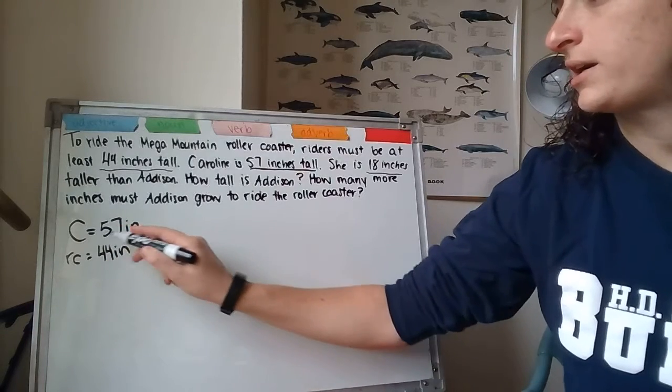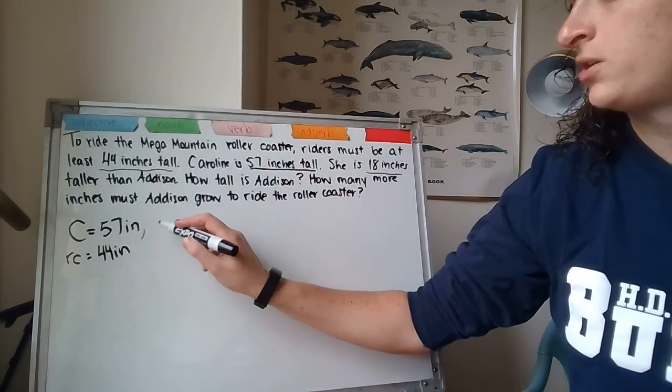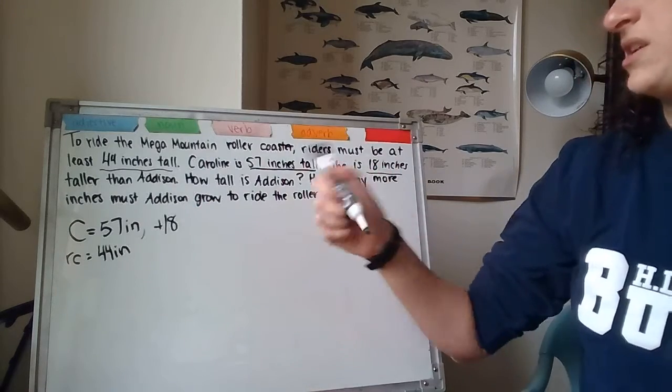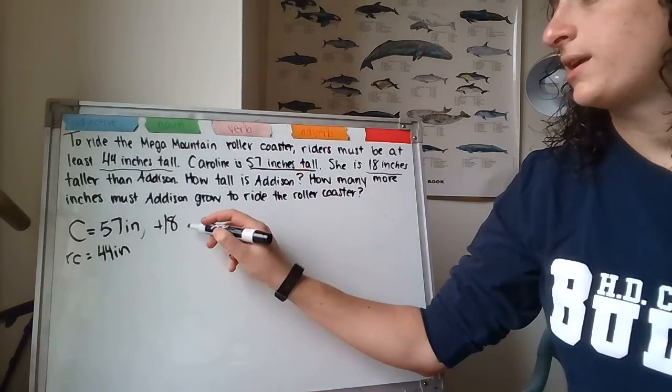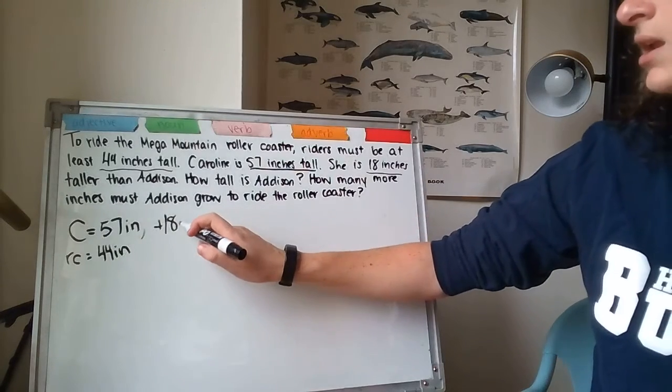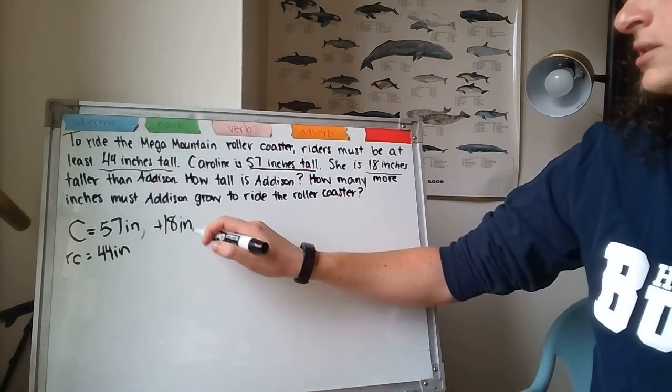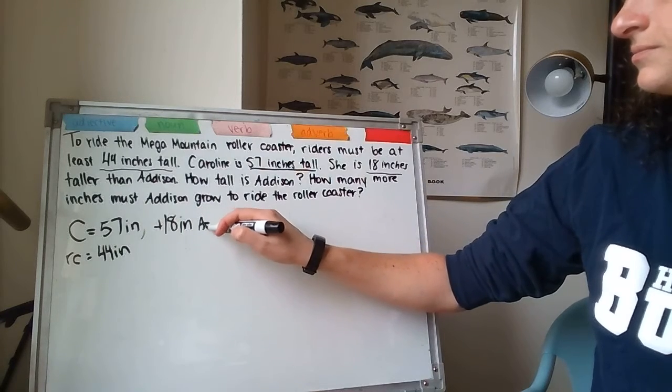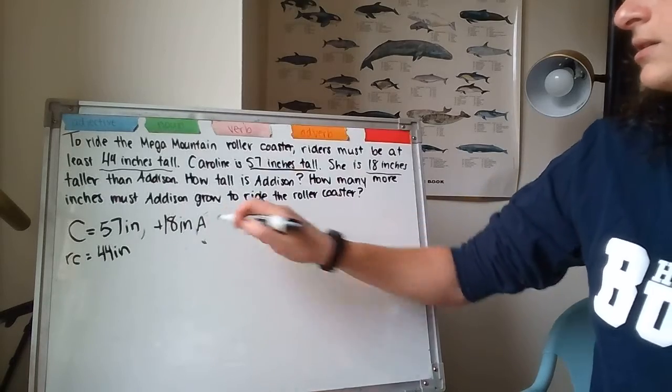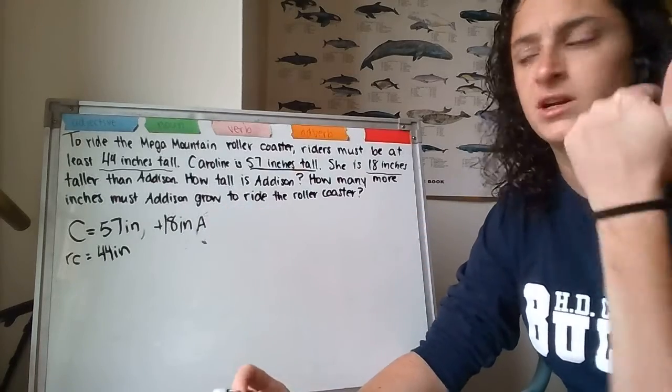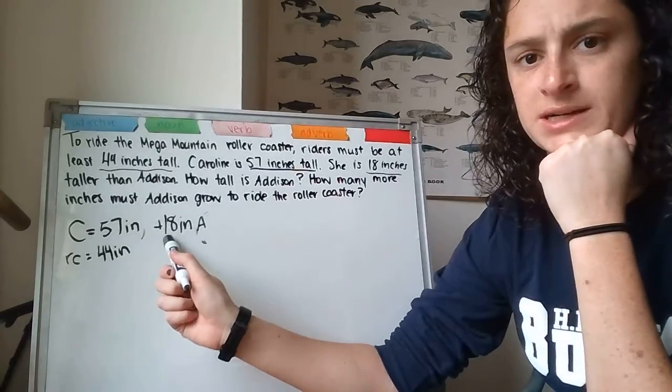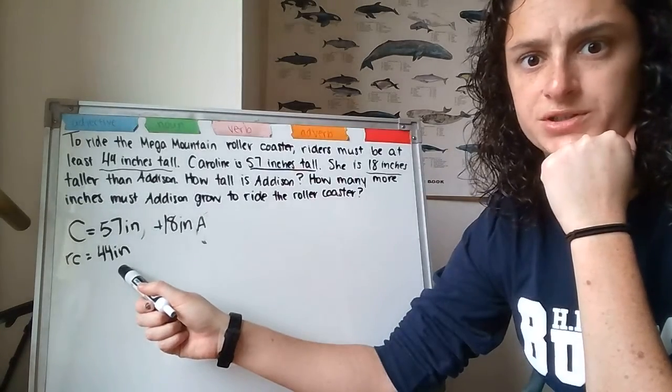So, Caroline, we know, is 57 inches tall. We know is 18 inches taller, that means more tall than Addison. Let me put inches in there, too. How tall is Addison? I'll just use A for Addison. So, we figured out what we know. We know Caroline is 57 inches. We know that she's 18 inches taller than Addison. We know that the roller coaster, you need to be 44 inches.